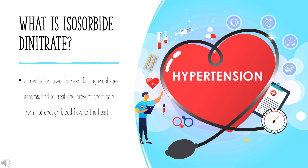Isosorbide dinitrate was first written about in 1939. It is on the World Health Organization's list of essential medicines. Isosorbide dinitrate is available as a generic medication. In 2020, it was the 299th most commonly prescribed medication in the United States, with more than 1 million prescriptions.